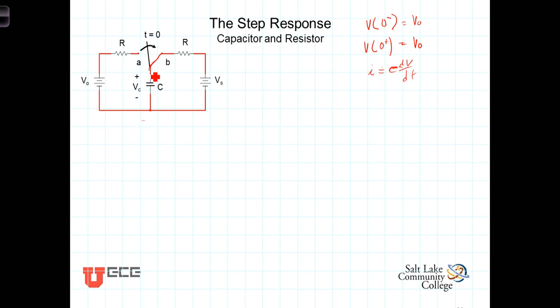So the step response has the capacitor starting out with initial voltage of V0 and connected to a circuit that involves this resistor R and this voltage source V sub S. Our task is to derive an expression for the voltage across the capacitor as a function of time, and in order to do this, we're going to write a Kirchhoff's voltage law around this right-hand loop.